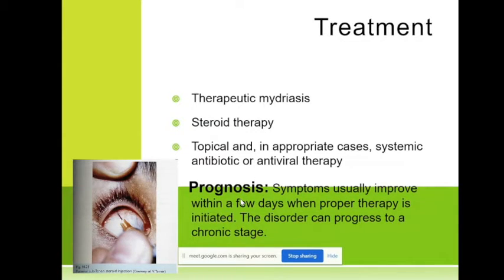That's why we begin with mydriasis — we have to dilate the pupil. The second is steroid therapy. The therapeutic mydriasis is achieved with atropine, tropicamide, mydrub, epinephrine, and so on — there are many drops available. Steroid therapy is usually given as drops, but sometimes in heavier cases we use injections.